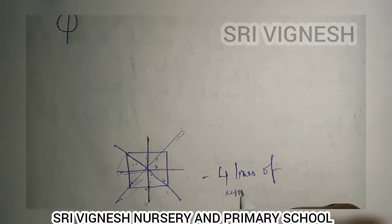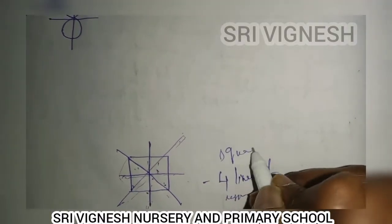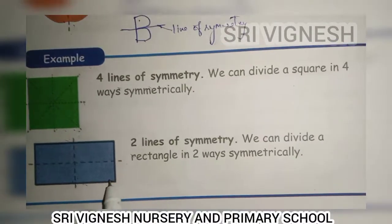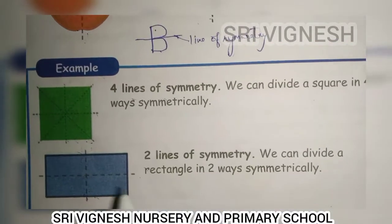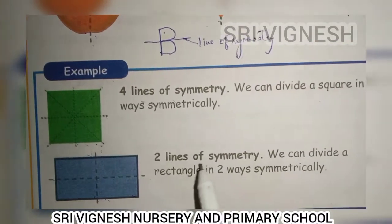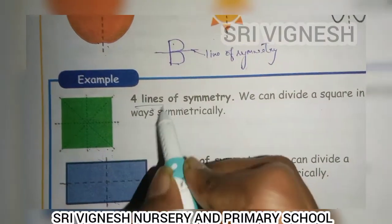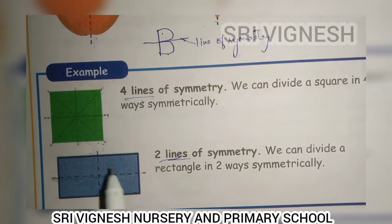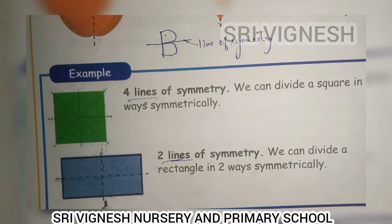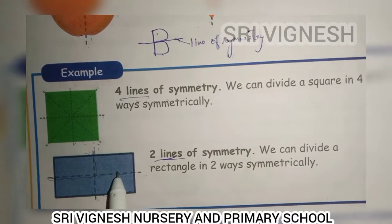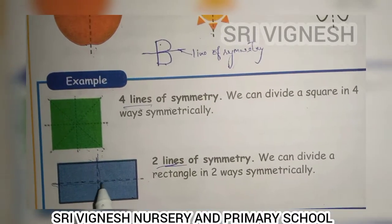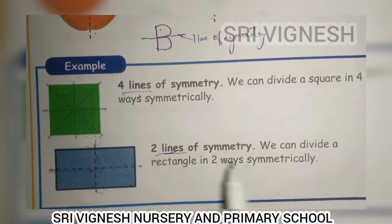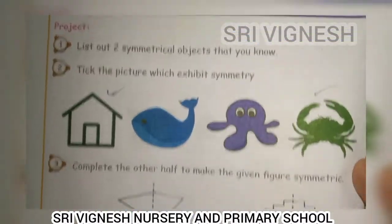So this is the rectangle with two lines of symmetry. Two lines — okay. Next, list two symmetrical objects that you know. If you look at the same picture, you will see the same picture on both sides. We will see the same picture.